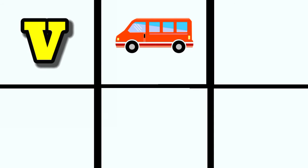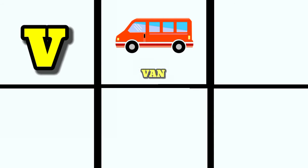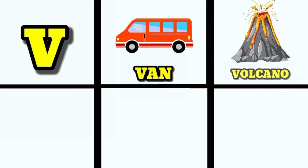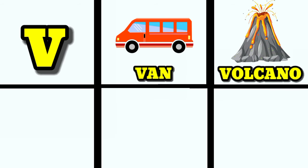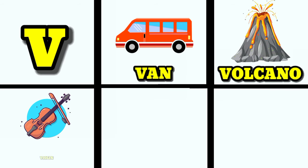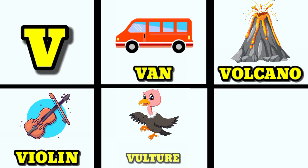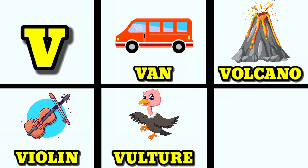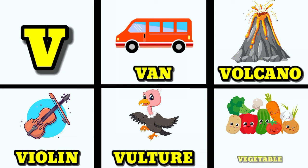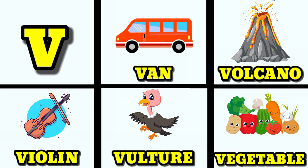V is for van. V is for volcano. V is for violin. V is for vulture. V is for vegetables.